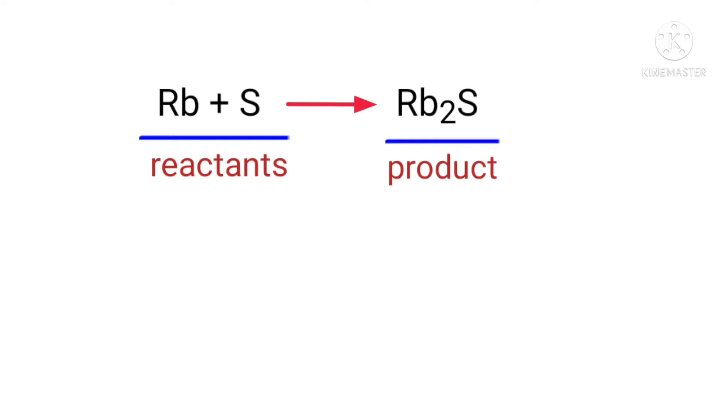In this equation, the reactants are rubidium and sulfur, and the product is rubidium sulfide. If you look at this equation, the equation is not balanced.